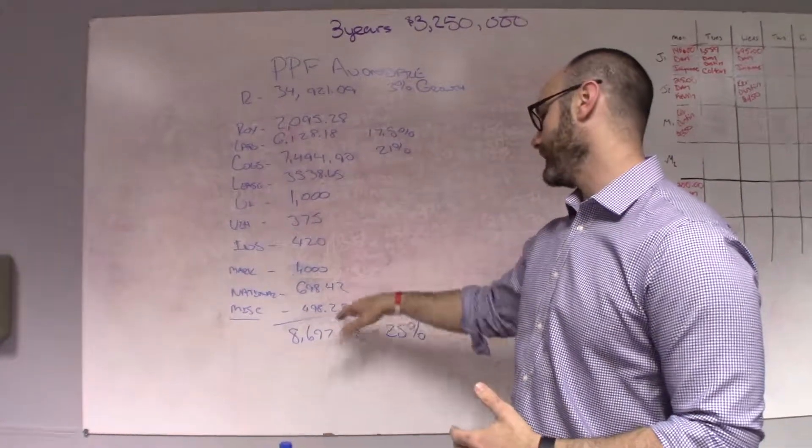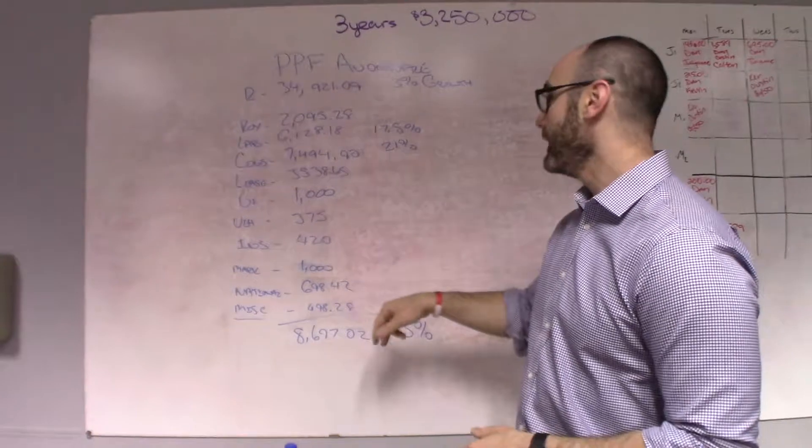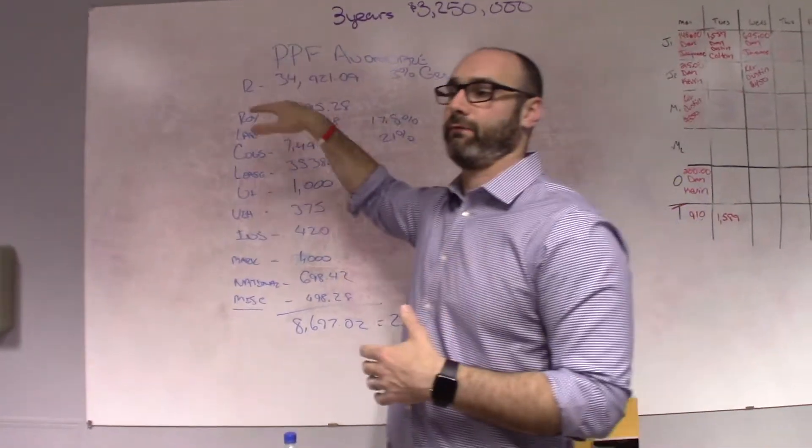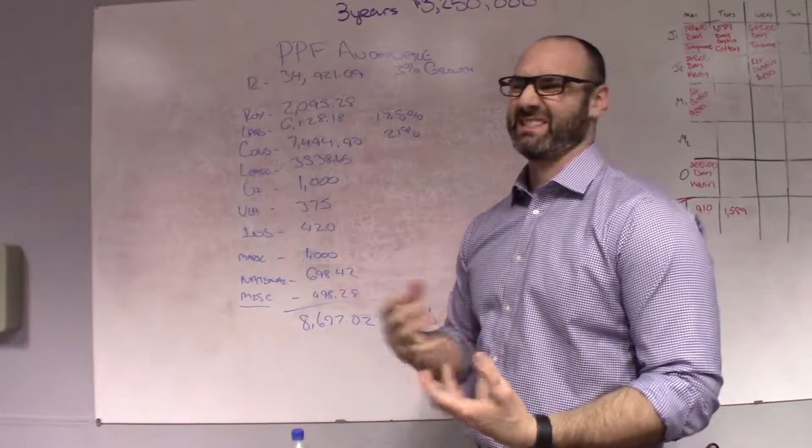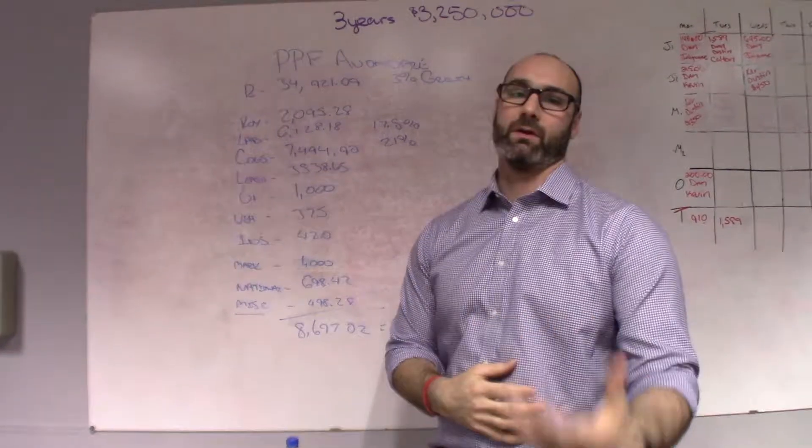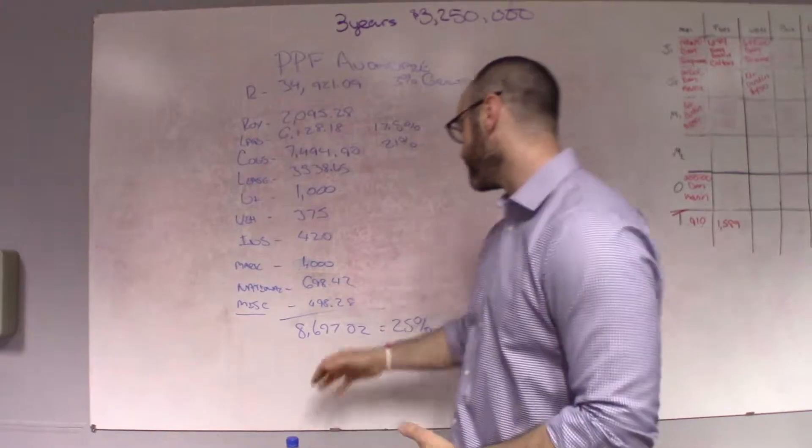Miscellaneous costs, $498.28. Actually, that's really low. Typically, we run about 5% to 10% on miscellaneous costs. That's those things like hand wash soap and all those things that you have to run next door to Acme and grab.